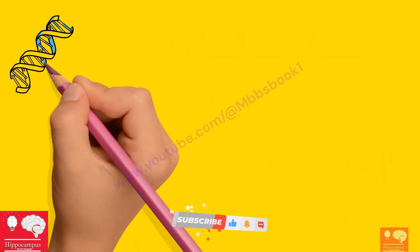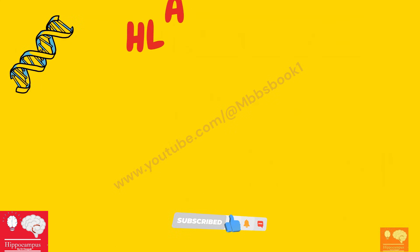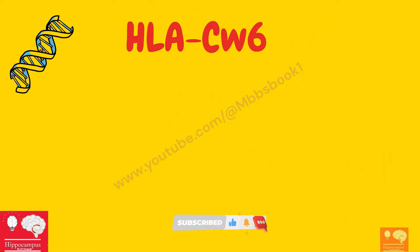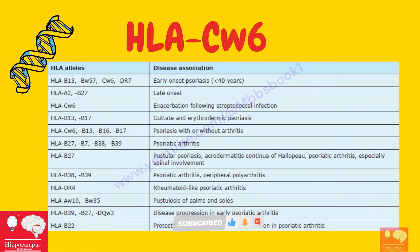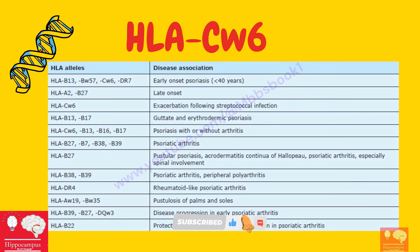Now the genetic components: HLA-CW6 remains strongly associated with psoriasis when found together with several different HLA-B alleles.